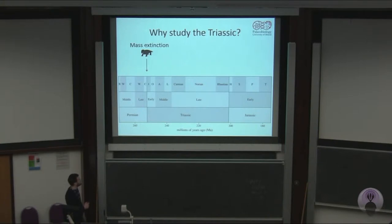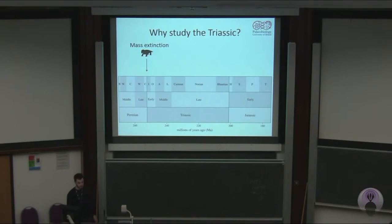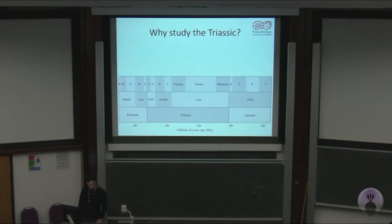The early Triassic is characterised by disaster taxa such as Lystrosaurus, which in South Africa makes up 70% of all body fossils — so it was a very damaging event. Throughout the rest of the Triassic, we see lots of other turnovers.